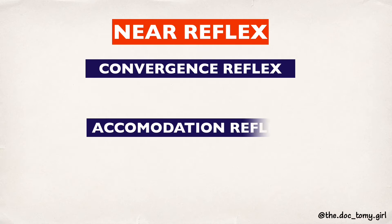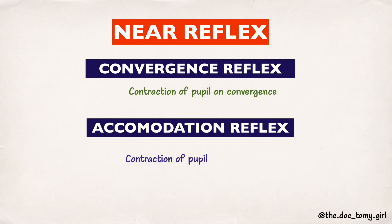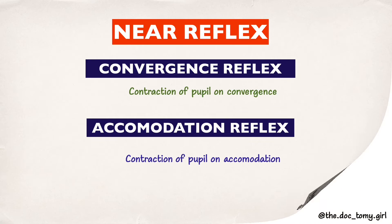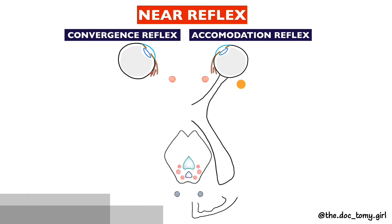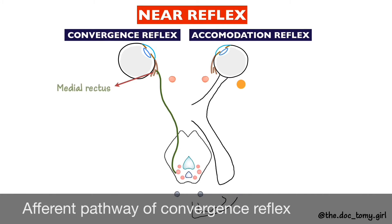The accommodation reflex is the contraction of the pupil on accommodation. Now let's see the pathways. The afferent pathway of the convergence reflex is still not elucidated. It is assumed that the afferents from the medial recti travel centrally.